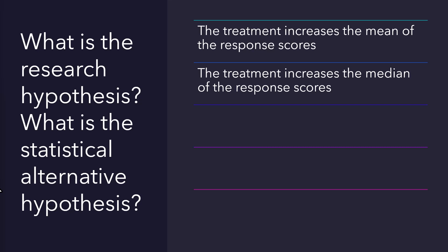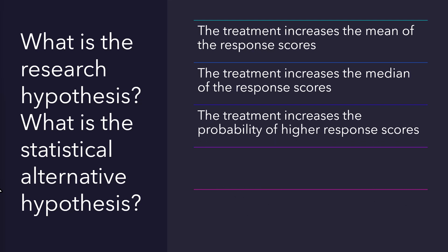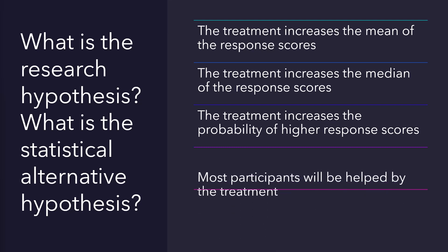Thinking more about what researchers really want to know about treatment effectiveness, perhaps we should expand our focus beyond distribution center. What about this hypothesis: participants in the treatment condition will be more likely to score higher than those in the control condition? I suggest that if we probe regarding what researchers typically want to know about a treatment, the answer will be that it works. This hypothesis is about the probability that the treatment will help an individual rather than about a shift in the center of the distribution. A distribution center can shift even if most people are not influenced by the treatment. We might also state the hypothesis in terms of the number of participants who are positively influenced by the treatment rather than by the probability of a positive effect.